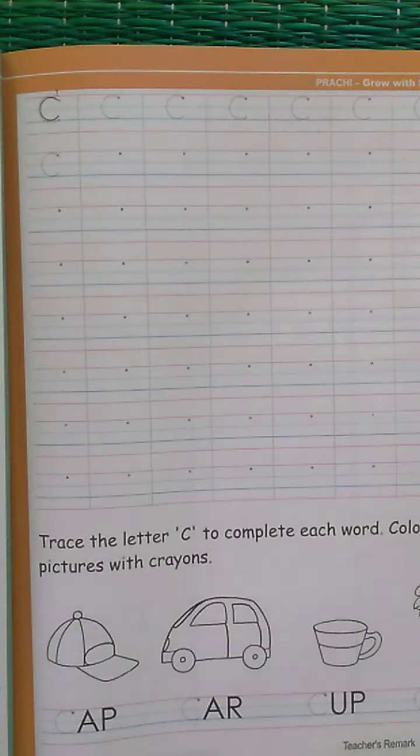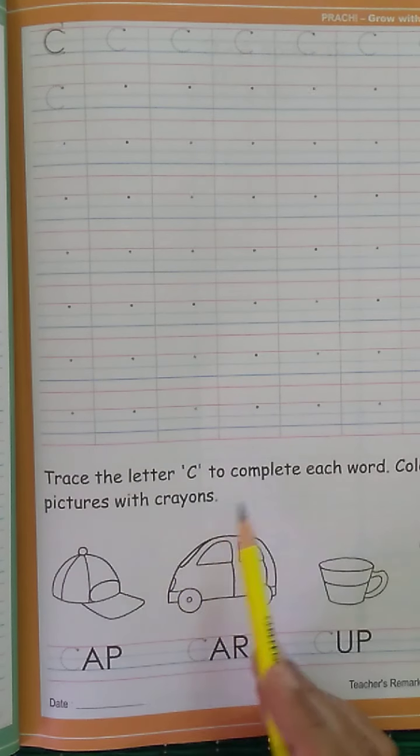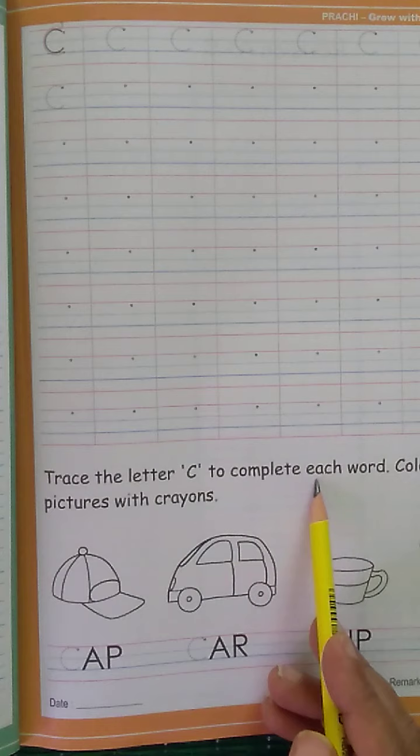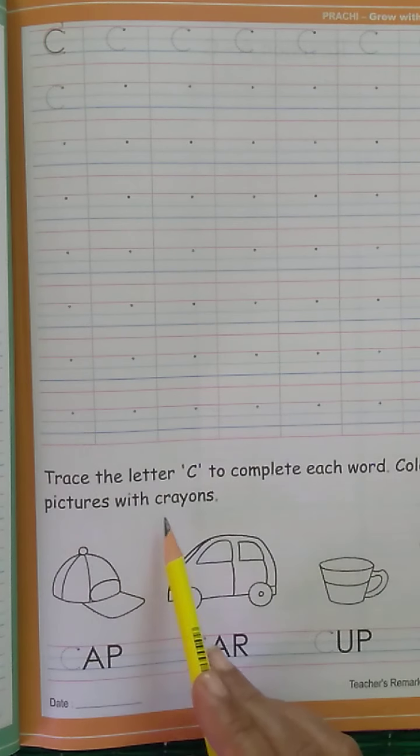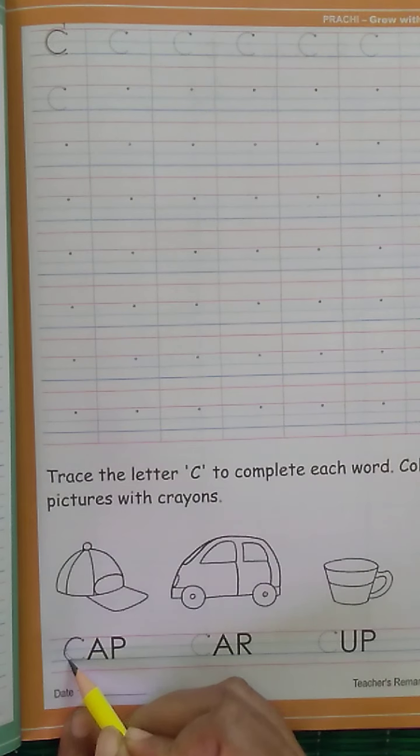After that, we will move to this activity. You have to trace the letter C to complete each word. Color the pictures with crayons. Start tracing the letter C.